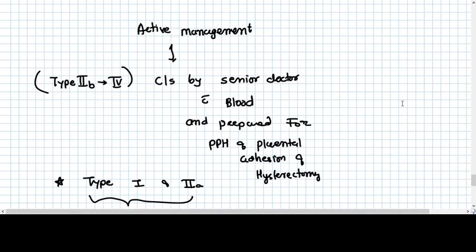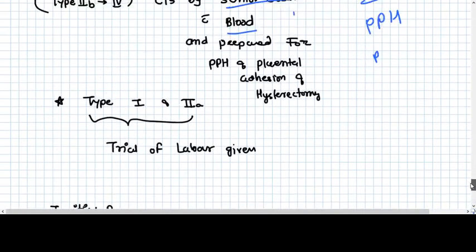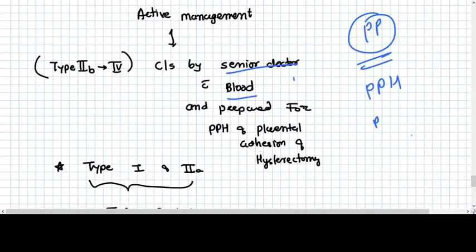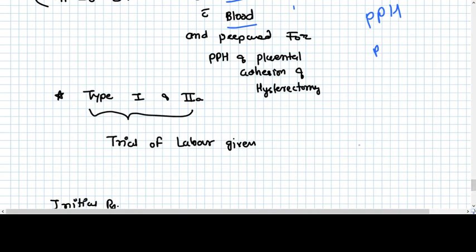And then the active management, where we talk about if very, very heavy bleeding is there, then we should go for active management, the cesarean section by senior doctor with blood prepared for PPH and placental adhesion and hysterectomy. Because placenta previa is a very, very risk factor of PPH, placenta accreta, percreta. So what we should do? We should take all the precautions for PPH. In case of placental adhesion, we have to do hysterectomy. We should take consent about that.